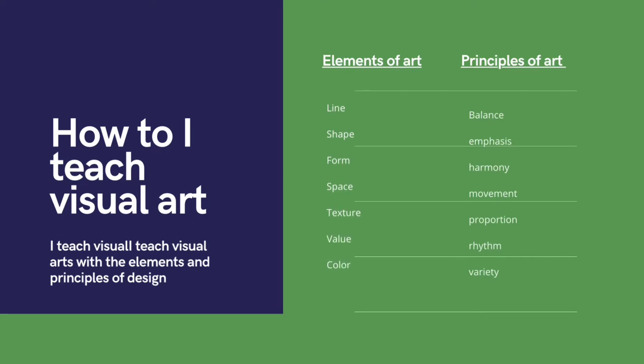The elements of art are line, shape, form, space, texture, value, and color. The principles of art are balance, emphasis, harmony, movement, proportion, rhythm, and variety.